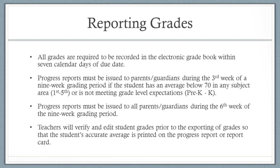When reporting grades, all grades are required to be recorded in the electronic grade book within seven calendar days of the due date. Progress reports must be issued to parents and guardians during the third week of a nine-week grading period if the student has an average below 70 in any subject area (grades 1st–5th) or is not meeting grade level expectations (Pre-K and Kindergarten). Progress reports must be issued to all parents and guardians during the sixth week of the nine-week grading period. Teachers will verify and edit student grades prior to exporting so that the student's accurate average is printed on the progress report or report card.